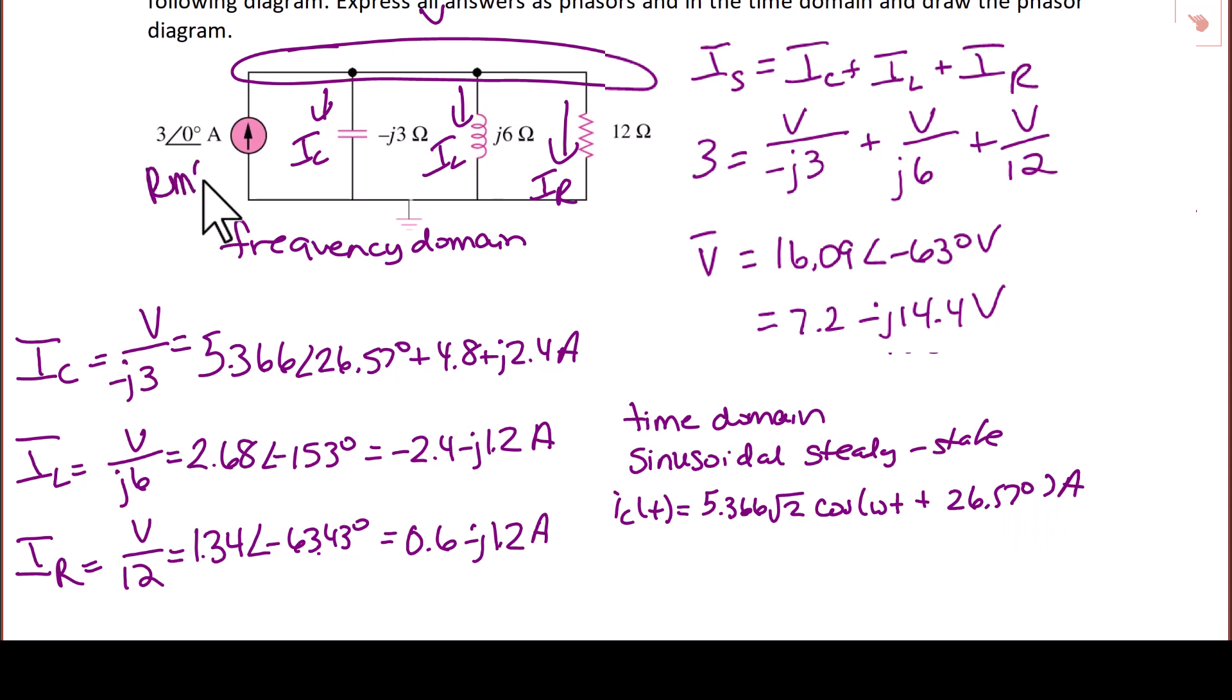Notice we don't know what omega is, so we just put omega. Then IL of t is going to equal 2.68 square root of 2 cosine omega t minus 153 degrees. And finally, IR of t is going to equal 1.34 square root of 2 cosine omega t minus 63.43 degrees.